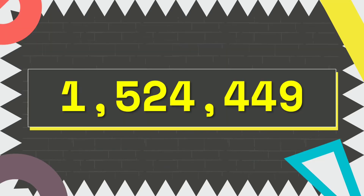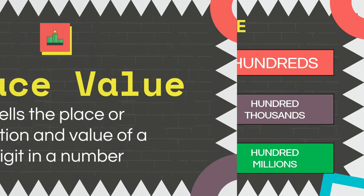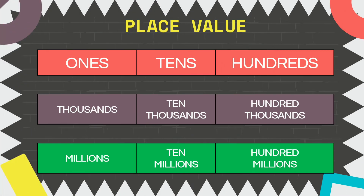And that is what 1,524,449 means — we have plenty of COVID cases in our country. The best thing we can do is to stay at home and always be safe. Always remember that place value tells the place or position and value of a digit in a number. Here are the place value names from right to left: ones, tens, hundreds, thousands, ten thousands, hundred thousands, millions, ten millions, and hundred millions.